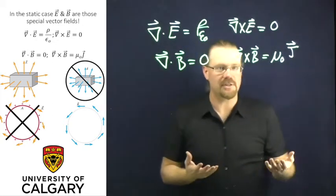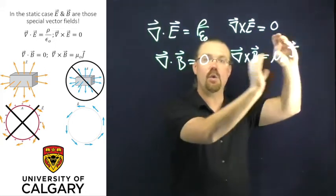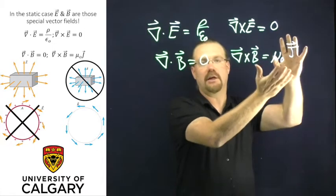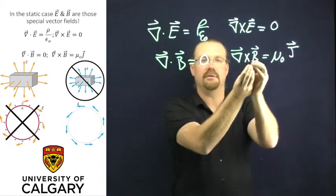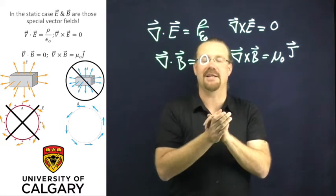And in the magnetostatic case, all we need to know is our currents. And if we know what our currents are, we can figure out from that current density what our magnetic field is, because this is the only driver for our magnetic fields in the magnetostatic situation.